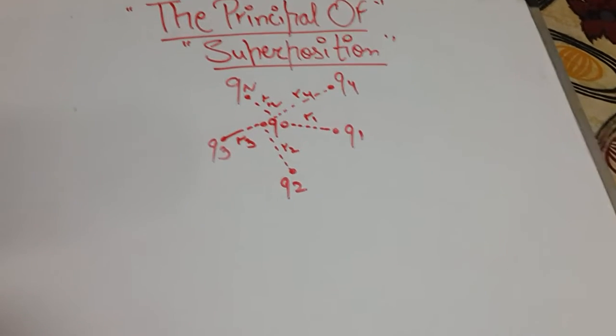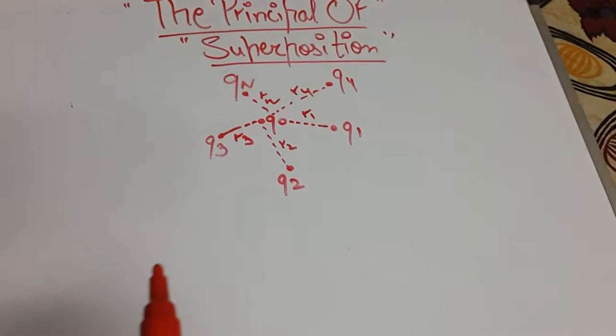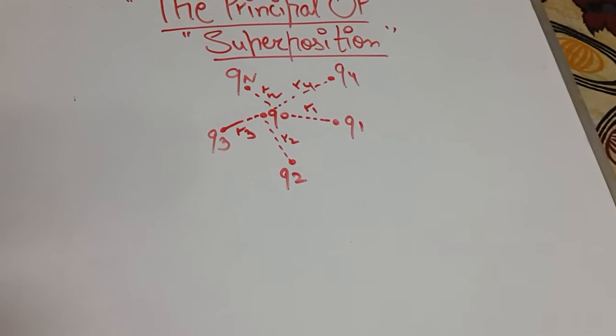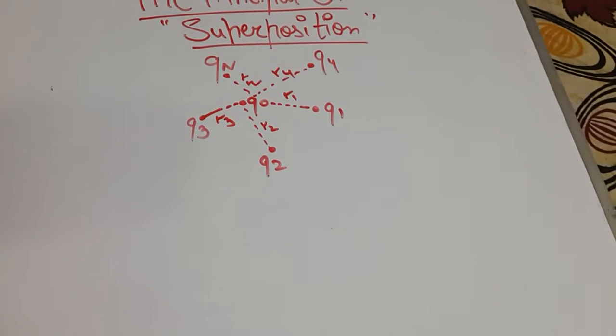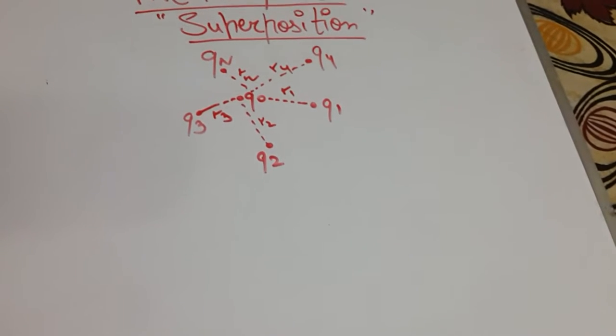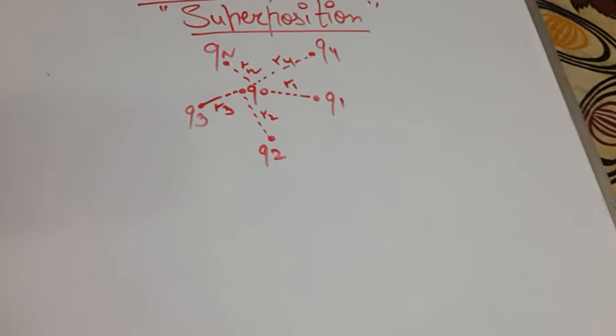total force on a given charge which is q0 in the diagram is the vector sum of forces exerted on it due to all other charges. The force between two charges is not affected by the presence of other charges.